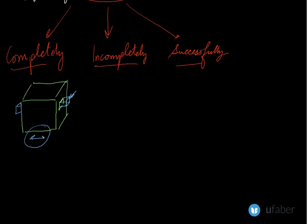The next type is incompletely constrained motion. In incompletely constrained motion, the motion between the two elements of a mechanism is possible in more than one direction, and it basically depends upon the direction of force applied.